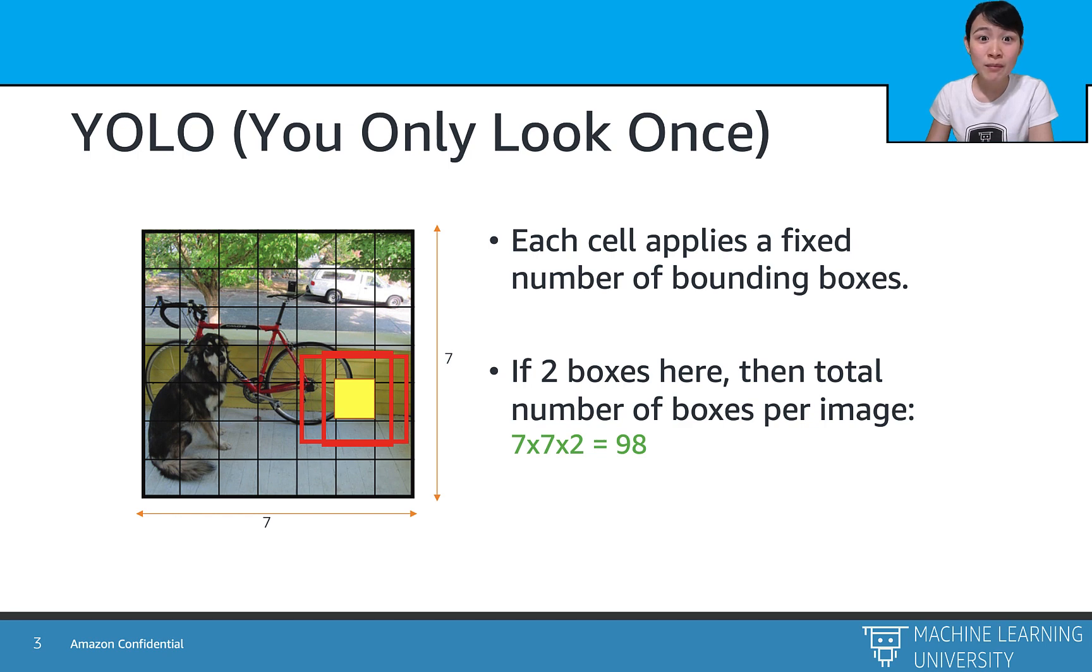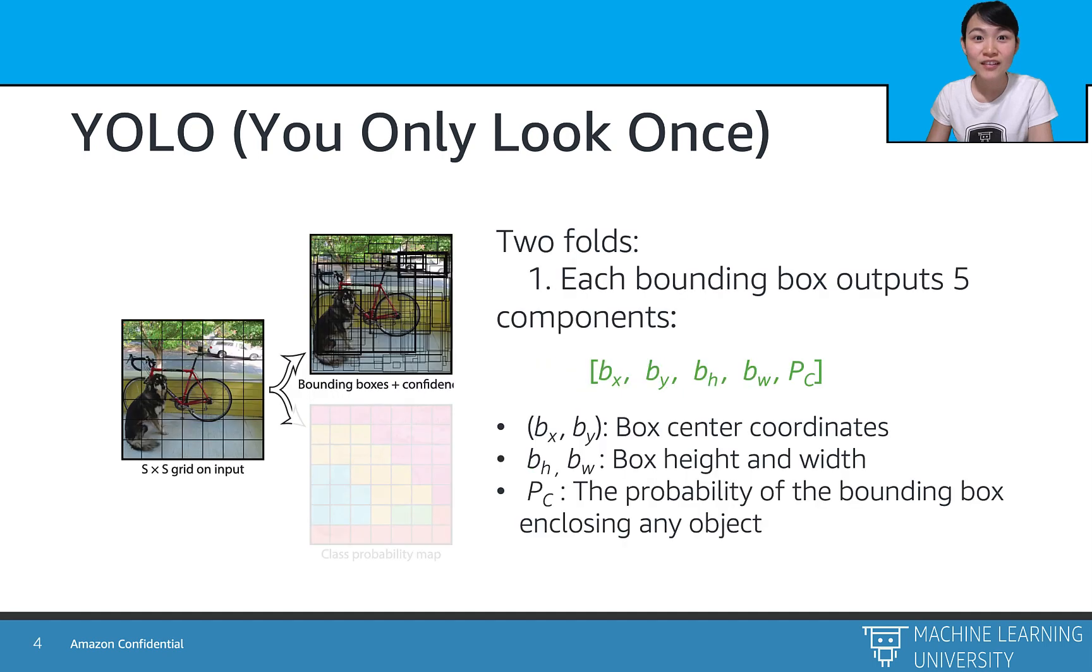Then, we can train a model and have each cell output one class label. After that, YOLO executes two folds of algorithms. The first, for each bounding box,